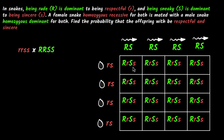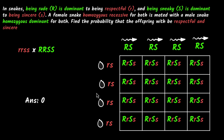You'll have capital R, small r, capital S, small s — which means all of the offspring are going to be capital R, which stands for being rude and is dominant, and capital S, which stands for being sneaky. So all the snakes will be rude and sneaky. What do we want? We want to see how many will be respectful and sincere. None of them will be, because for being respectful you need both small r's, and for sincere you need both small s's — that's not possible anywhere here. So our answer is zero.